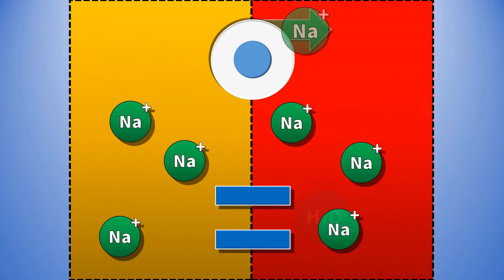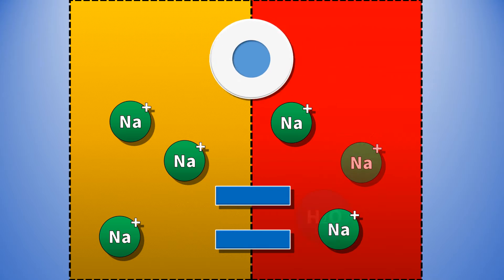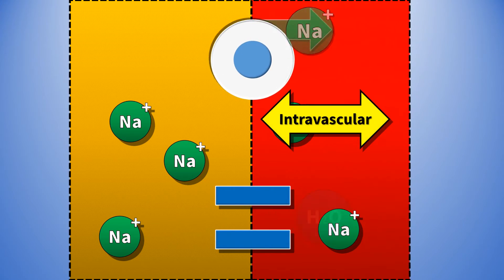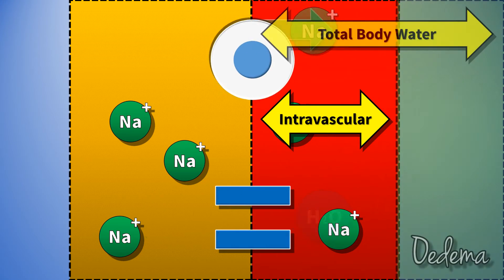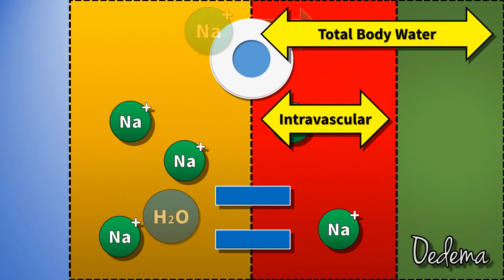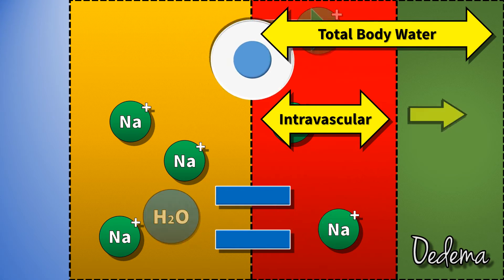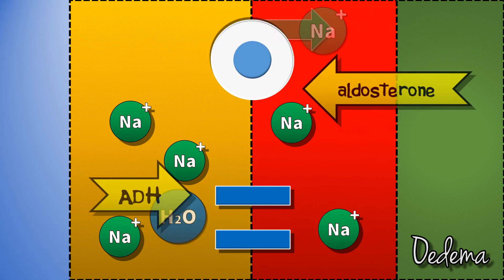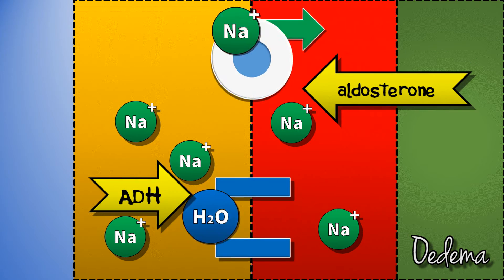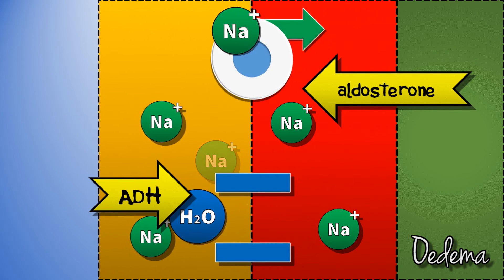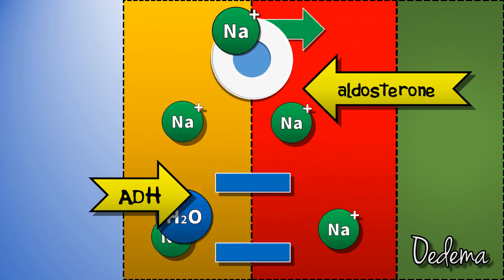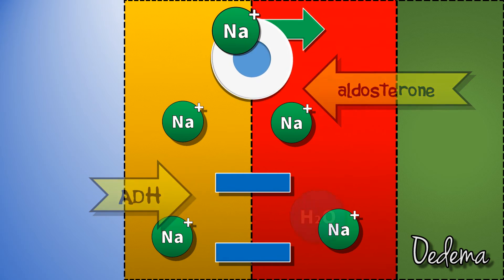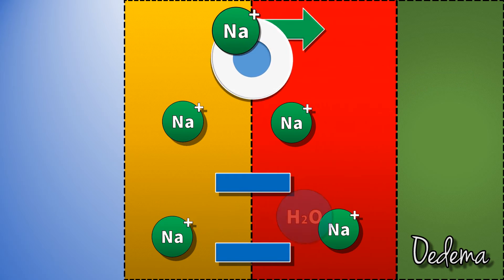In this situation, intravascular volume is low despite the patient being overloaded. All of the fluid is out here, in the elephant graveyard. ADH and aldosterone are putting their back into it, trying to rehydrate someone who looks wet but behaves like they're dry, because the fluid is in the wrong place.